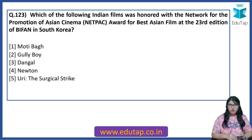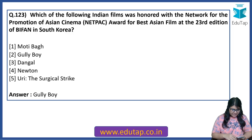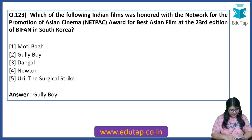Which of the following Indian films was honored with the Network for the Promotion of Asian Cinema Award for Best Asian Film at the 23rd edition of BIFAN in South Korea? There can be a confusion between Uri and Gully Boy. The answer is Gully Boy. And the Women's Footballer of the Year Award went to Asha Lata Devi.